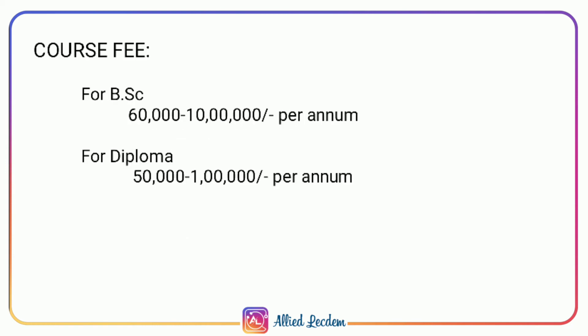Course fee for BSc Operation Theater and Anesthesia Technology will be around 60,000 to 10 lakhs per annum, and for Diploma in Anesthesia Technology will be around 50,000 to 1 lakh per annum.